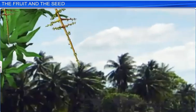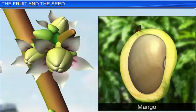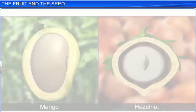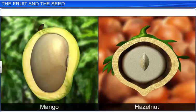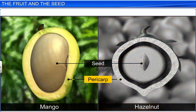Once fertilization takes place in a flower, the ovary ripens to form the fruit and the ovules form the seeds. Typically, a fruit is made up of two parts: the pericarp and the seed. The pericarp is the fruit wall, and it can be thick and fleshy as in mango, or dry as in hazelnut.